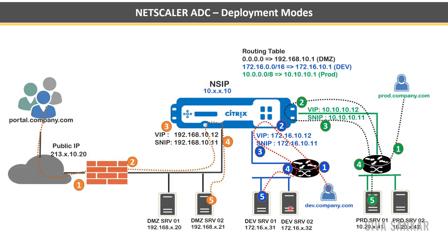The third case is multi-arm mode — for example, you might have separate arms for DMZ, development, and production. If your VIP is on one side and back-end servers on another, traffic flows from the VIP to the back-end servers across those interfaces. This is a typical multi-arm mode setup.